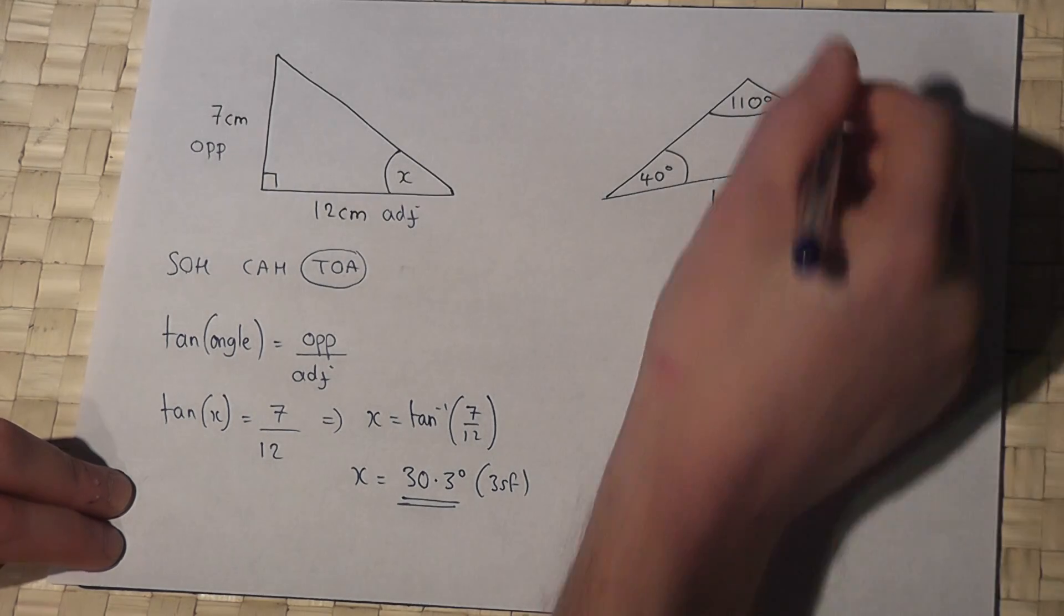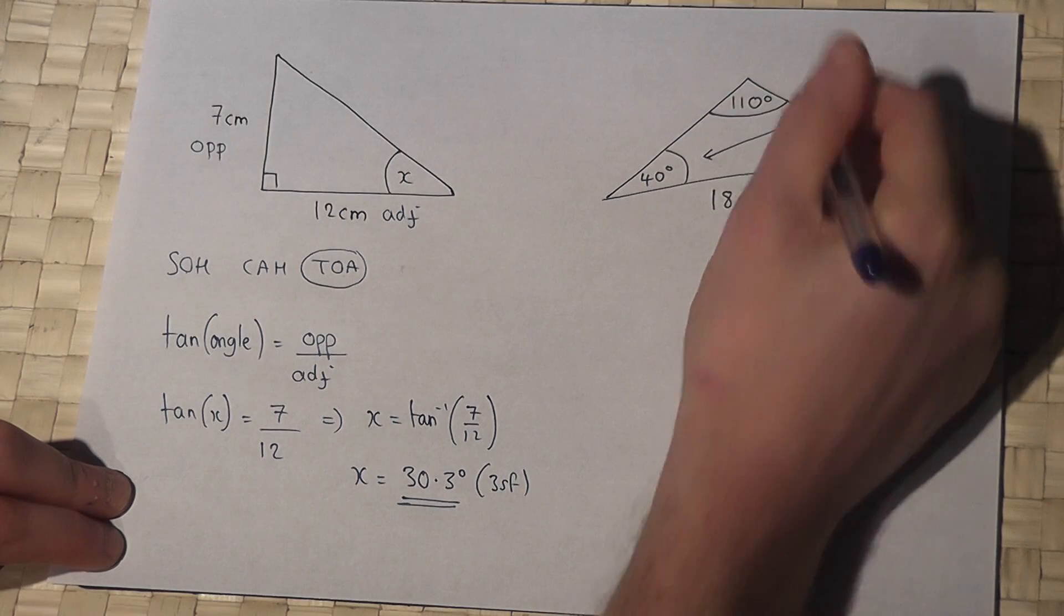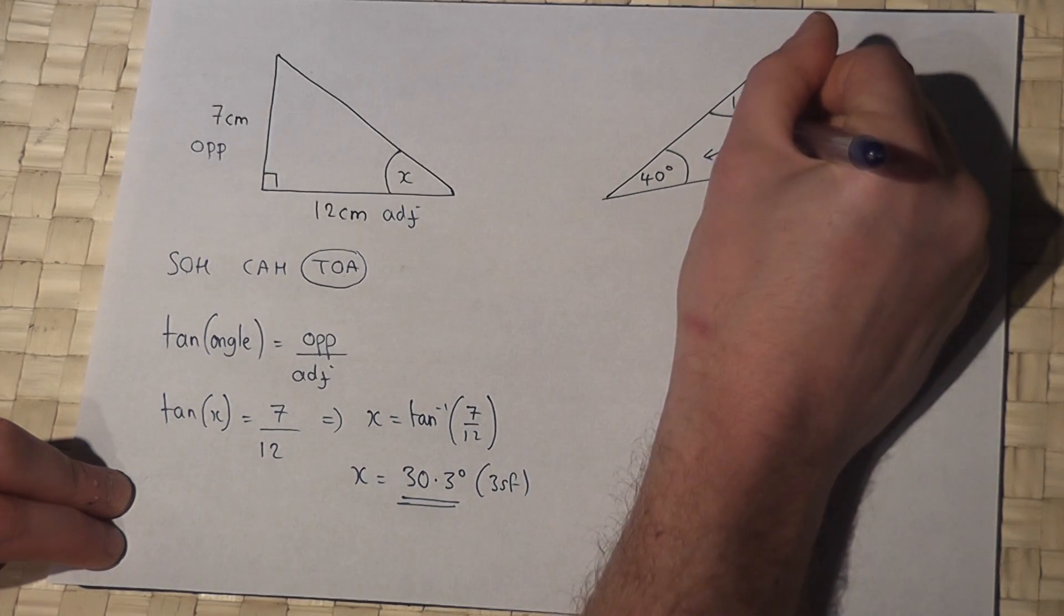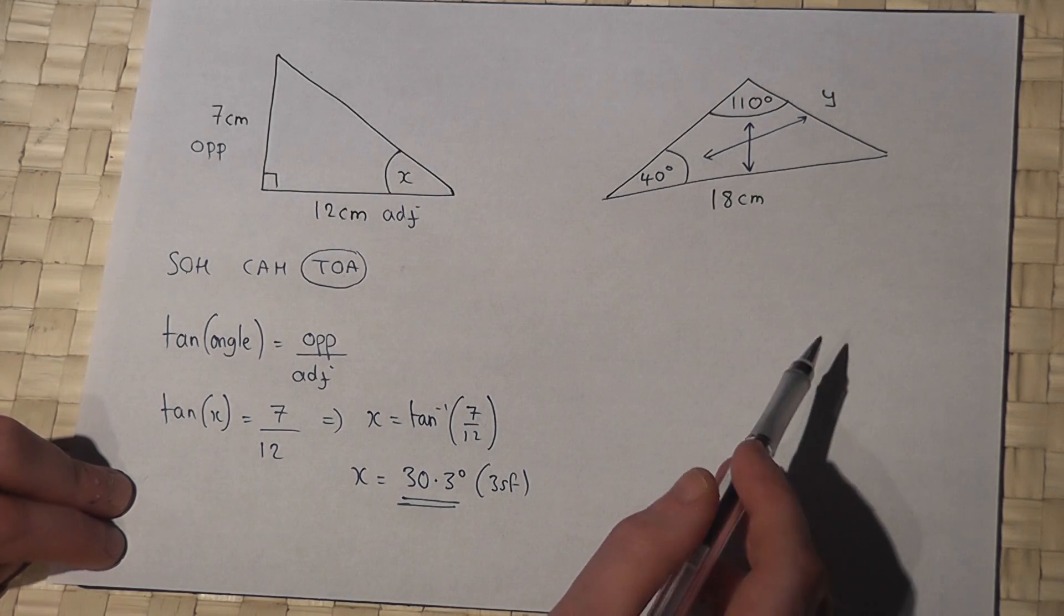Now what's special here is that the side is opposite that angle there, and this side is opposite that angle there. And so this means that I can use what's called the sine rule. Now here's what the sine rule states.